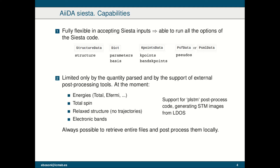At the moment we can parse the energies, the total spin, the relaxed structure, the electronic bands, and we also have support for the PLSTM code, which is a post-processing tool that generates STM images from the local density of states. In any case, it is always possible to retrieve entire files, store them in the database as a single data file, and post-process them locally.